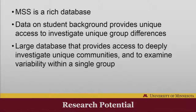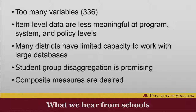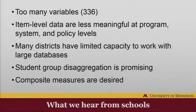The data on student background provides really unique access to investigate group differences and community differences — this is what initially drove us to look at the database. But quite frankly, 336 variables are too many. When these data go back to schools and school districts, most don't have the capacity to dig through 336 variables, and the item-level data are not particularly meaningful at program, system, and policy levels.